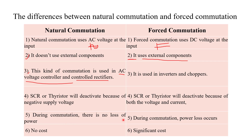Fifth point: during natural commutation there is no power loss, because the commutation happens naturally without any external circuitry. In force commutation, power loss occurs because external circuitry is used to forcefully turn off the device. Sixth point: natural commutation has no cost, whereas force commutation involves significant cost since external circuitry and components are required to turn off the device.